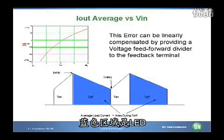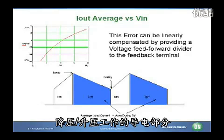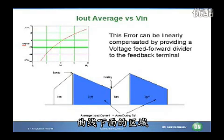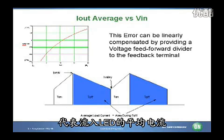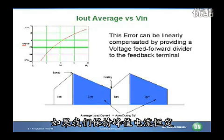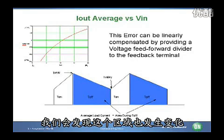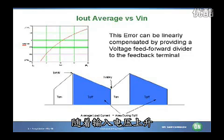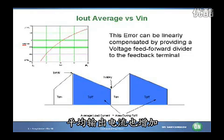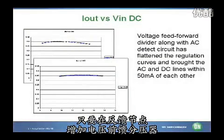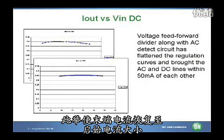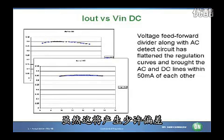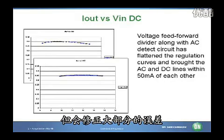Looking at the waveform, the blue area is a plot of the conduction time of the LED for a buck-boost. The area under this curve represents the average current going to the LED. If we just keep the peak constant and move V-in, that area will change — as V-in goes up, the average output current will increase as well, as shown in the upper left corner. This error in average output current can be corrected by adding a voltage feed-forward divider to the feedback node, which brings the end current back down to where the start current was, resulting in a small tolerance but correcting much of the error.